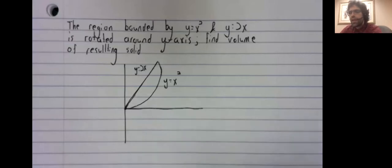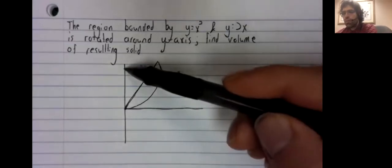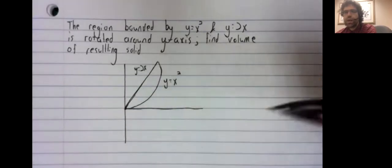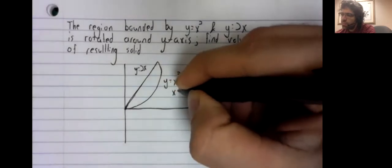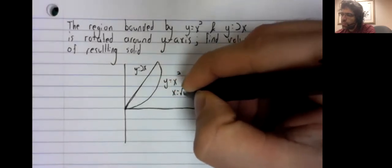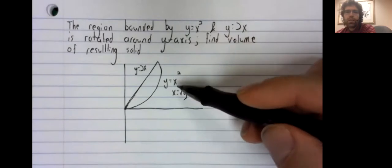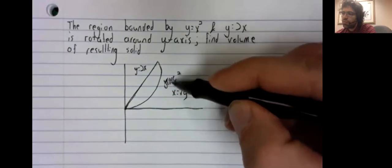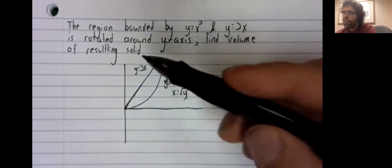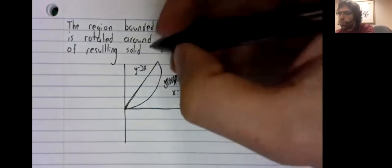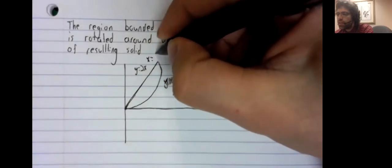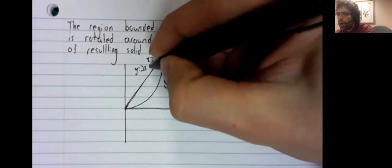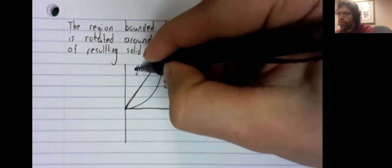Everything is going to have to be in terms of y since we have a vertical axis. Y equals x squared is the same as x equals the square root of y, and y equals 2x is the same as x equals y over 2.